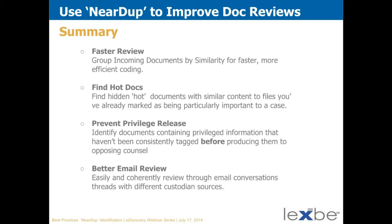In summary, near-dupe is an exciting technology that does four things: it allows for a faster and better review by grouping incoming documents by similarity for faster and more efficient coding; it provides the ability to find hot and key documents, since similar content based on text can be easily jumped to in order to follow strings out from important documents; it's an important tool for preventing inadvertent privilege release, providing a backup check before production goes out to ensure all versions of privileged and work product documents have been found; and lastly, it makes for a really nice way to do email review by threading emails that are close to each other and ought to be grouped together.